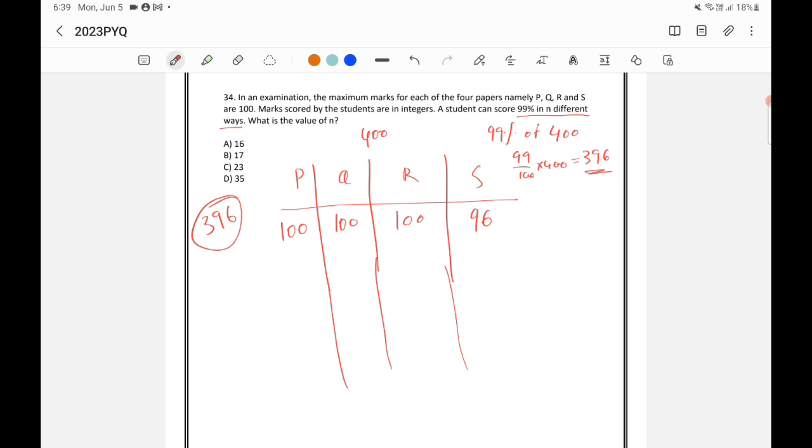So S can be 96. Either R can be 96, or Q can be 96, and P can be 96. So there will be total 4 possibilities in this combination 100, 100, 100, 96. There are 4 combinations.